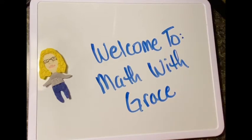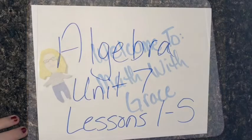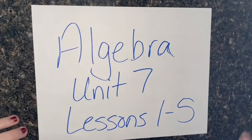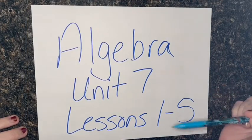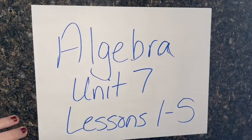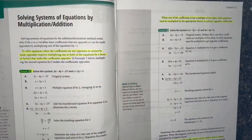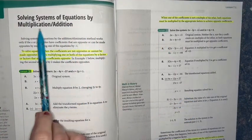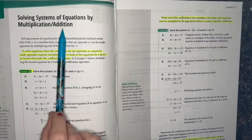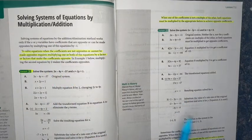Welcome to Math with Grace. Today we're going to be looking at Algebra Unit 7, Lessons 1 through 5. Lesson 1 begins on page 2, and it's Solving Systems of Equations by Multiplication and Addition.